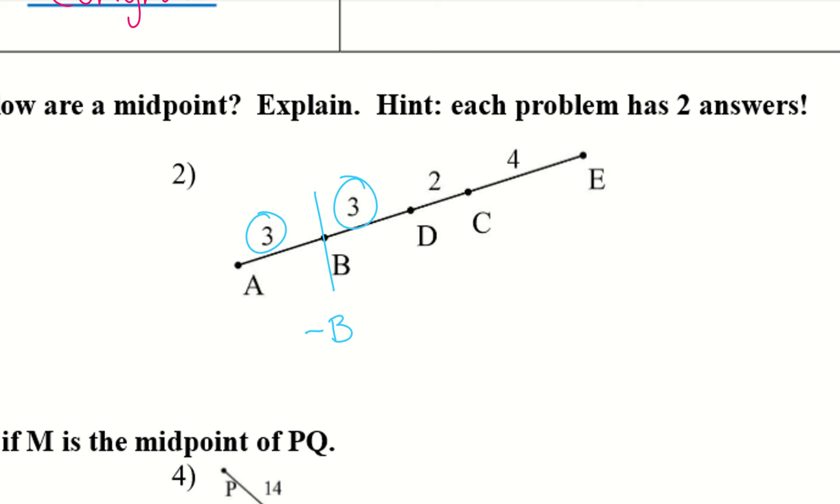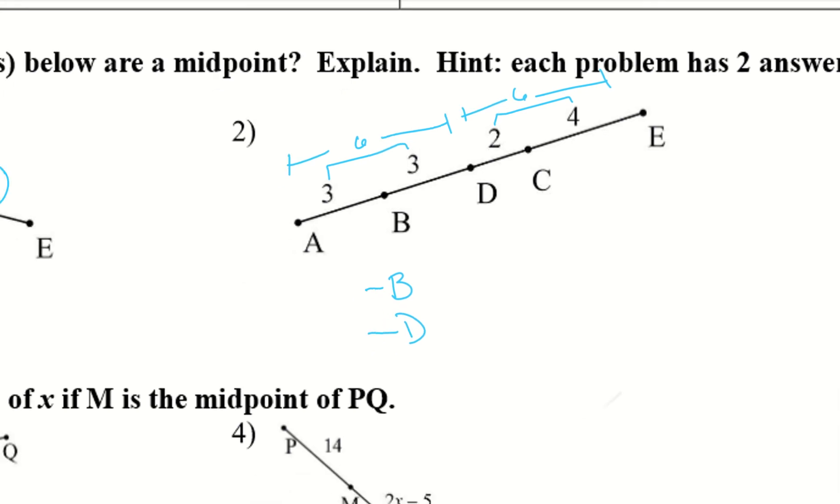And then if I look on the other side we have a four and a two. So those aren't the same numbers so we can't say that C is a midpoint. But let's go ahead and add these together. So three plus three equals six. So that means AD is six. And then if I add four and two, that is also six. So that means D is the mid-segment of this entire line. It divides this segment right in half.